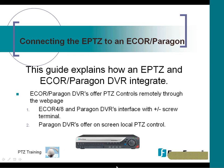Next, we're going to go through connecting the EPTZ to an ECOR or a Paragon DVR. The ECOR and Paragon DVRs also offer PTZ controls remotely through the web page. The ECORs — 4 and 8 channels — and the Paragon DVRs are interfaced with a positive and negative screw terminal, so they do not use the RS-485. Also as a side note, the Paragon DVRs do offer on-screen local PTZ control, so with the Paragon units you no longer have to purchase an EKD to control it on-site if the DVR is not connected to the network.